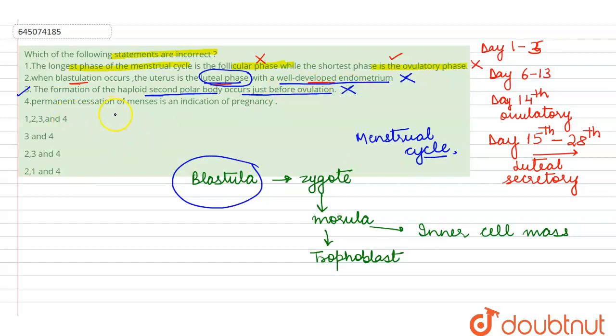Then this fourth option is permanent cessation of menses is an indicator of pregnancy. That means when the menses completely stop altogether, this stage is called as menopause, whereas pregnancy is a temporary cessation of menses. So here we see that all the four statements are wrong, so we can mark this as a right answer for this question.